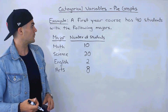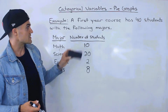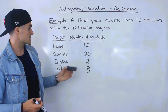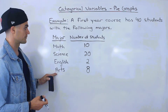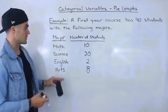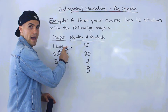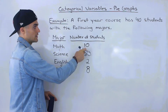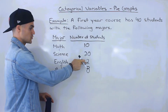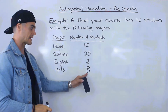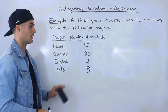In this example we have a first-year course that has 40 students with the following majors: 10 of the 40 students are in math, 20 of the 40 are in science, 2 of the students are in English, and 8 of the students are in arts.